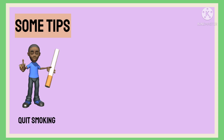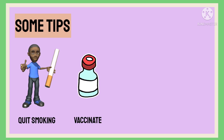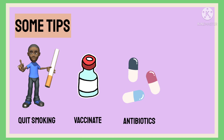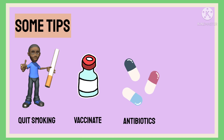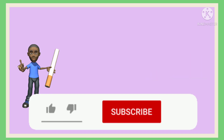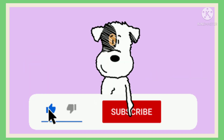Some tips to manage bronchiectasis at home: quit smoking; take vaccination for influenza and pneumococcal infection as prescribed by your doctor; take your antibiotics on time; and stay hydrated to prevent thickening of the mucus. For more such information, kindly like the video and subscribe to the channel.